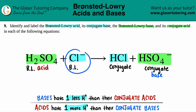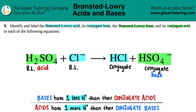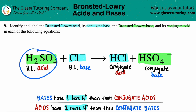Now just do the same thing for the other pair: Cl⁻ and HCl. The acid always has one more hydrogen — HCl has one hydrogen, and Cl⁻ has no hydrogens. So HCl has to be the acid, and it's the conjugate acid because it's on the product side. And Cl⁻ has to be the base. Now take notice that for each side you only have one acid and one base — you can never have two acids or two bases coming together. So if that happens, just stop and go back, because something went wrong. That's a quick way to check if you're doing it correctly.